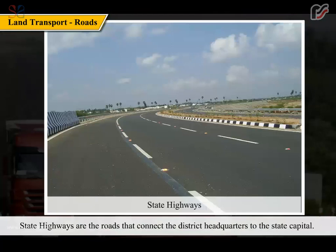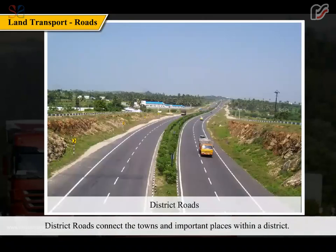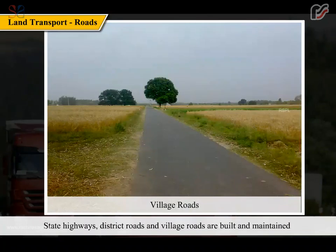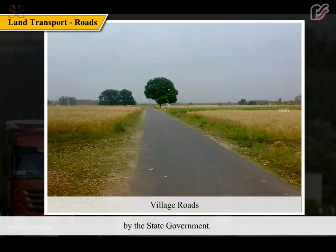State highways are the roads that connect the district headquarters to the state capital. District roads connect the towns and important places within a district. Village roads link the villages to the town or district roads. State highways, district roads and village roads are built and maintained by the state government.